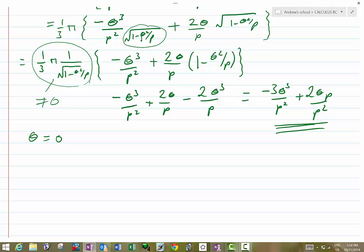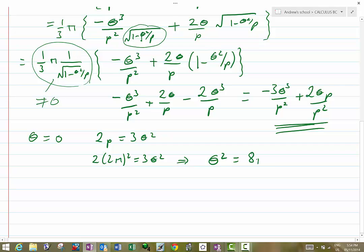Or the other one is to say that 2p is equal to 3 theta squared. Or in other words, 2 times 2 pi squared is equal to 3 theta squared. Or in other words, theta squared is equal to 8 pi squared over 3. And this is the solution.